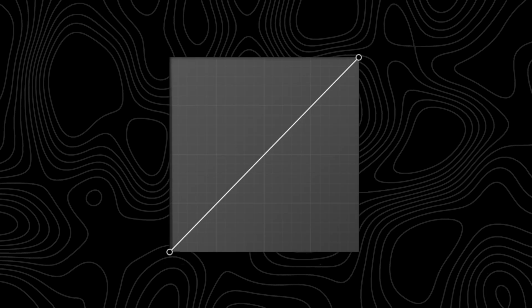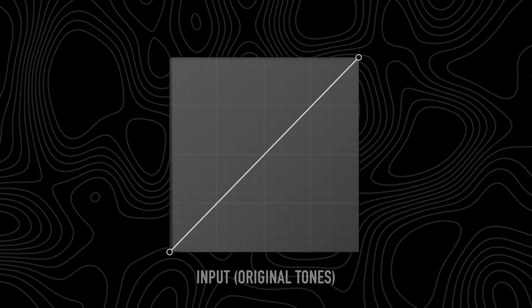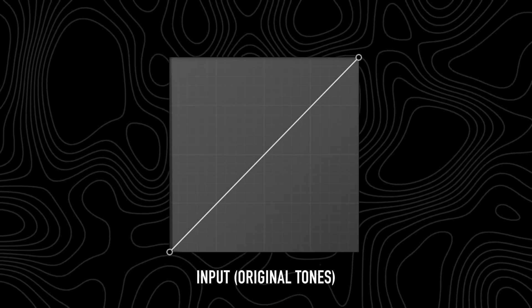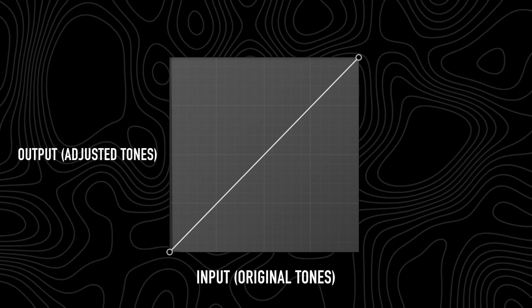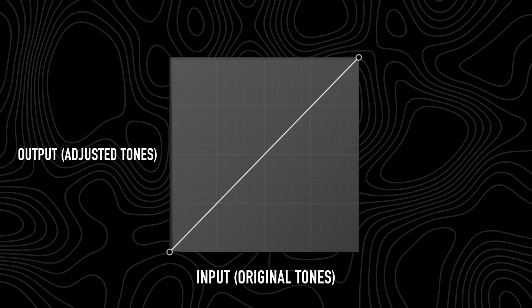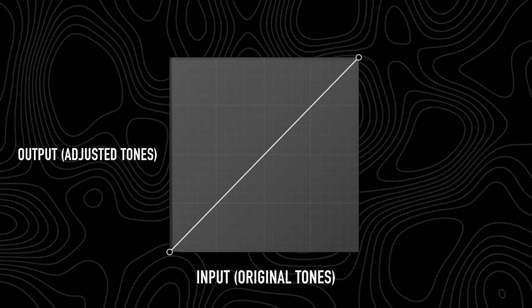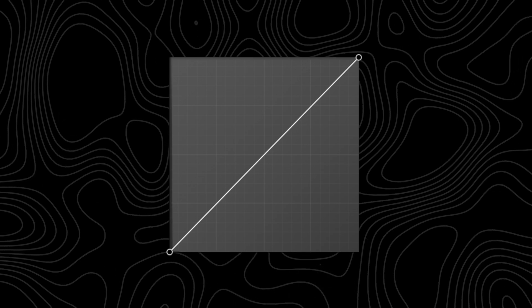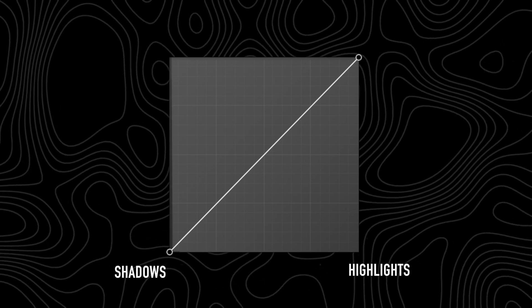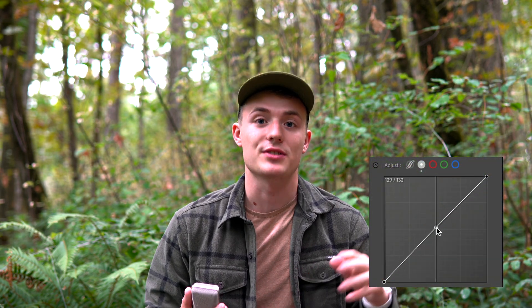The basic tone curve is a graph where the horizontal axis represents the input or the original tones of the image, and the vertical axis represents the output or adjusted tone. The tone curve is typically represented by a diagonal line running from the bottom left, representing the shadows, to the top right, representing the highlights. To brighten an image you can drag the middle of the tone curve upwards, and to darken you can drag it downwards.